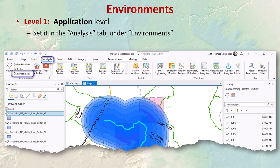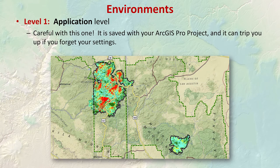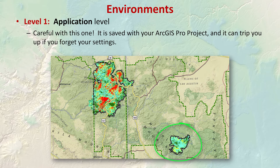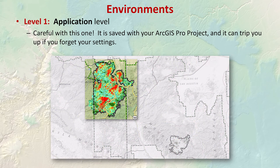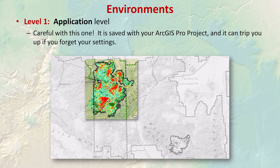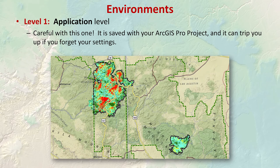Application-level settings can trip you up if you're not careful. I had this experience myself analyzing fires in Arizona and New Mexico — the Wallow Fire on the Apache-Sitgreaves National Forest and the Miller Fire on the Gila National Forest. I set the processing extent to the area around the Wallow Fire to speed things up. When I moved on to the Miller Fire, I forgot I'd set those application environments. Every tool ran 'successfully' but produced empty datasets — the processing extent was still set for the Wallow, so all the Gila data was just being clipped out.